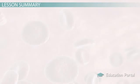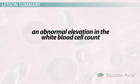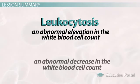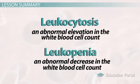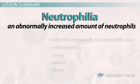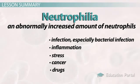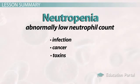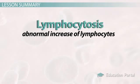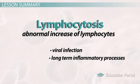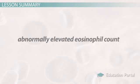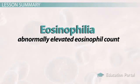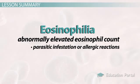An abnormal elevation in the white blood cell count is called leukocytosis, and an abnormal decrease is termed leukopenia. Neutrophilia is an abnormally increased amount of neutrophils that mainly occurs due to bacterial infections and acute inflammation, and is commonly the cause of leukocytosis. An abnormally low neutrophil count, called neutropenia, can occur for a wide variety of reasons including infection, cancer, and toxins. An abnormal increase of lymphocytes, lymphocytosis, is usually attributed to viral infections or long-term inflammatory processes. Finally, eosinophilia — an abnormally elevated eosinophil count — is commonly a result of parasitic infestation or allergic reactions.